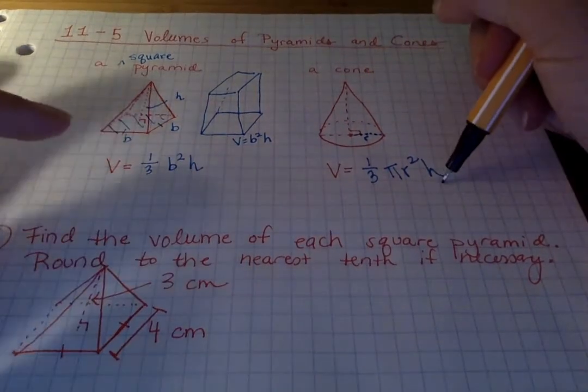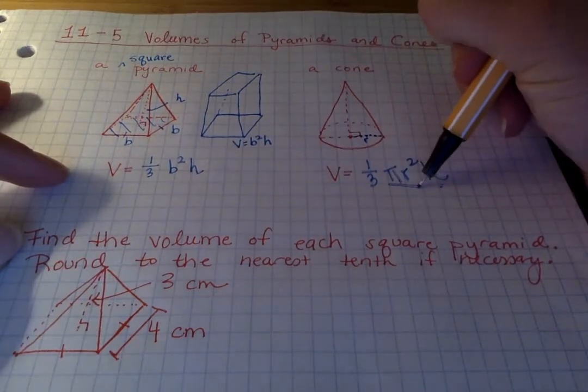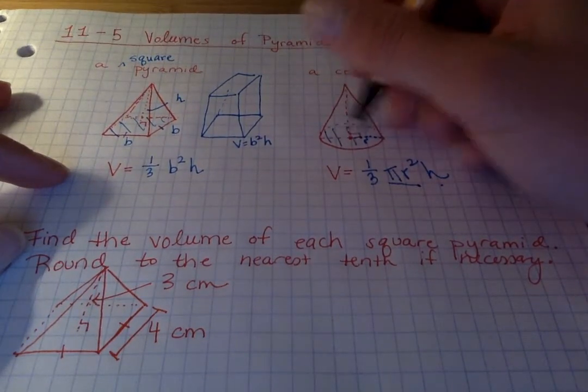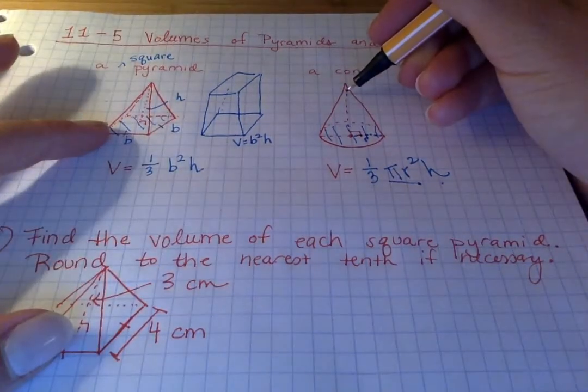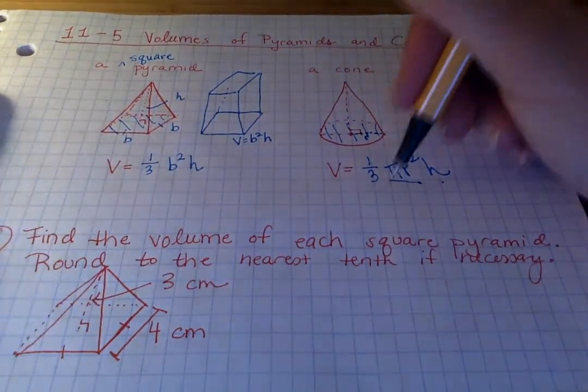So this is a very similar formula to this one, because pi r squared is the area of a circle. So that's the area of the circle down here. And then we're multiplying it by the height, like we did here for the square pyramid, to get our third dimension there. Then we're taking a third of it.